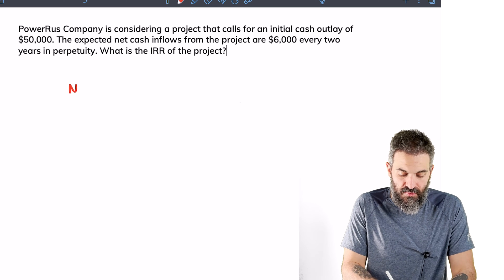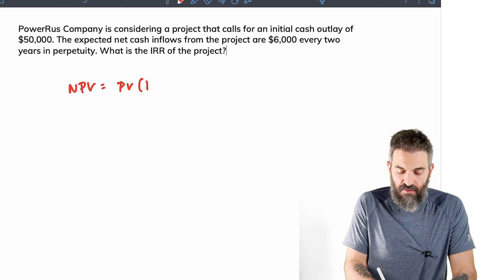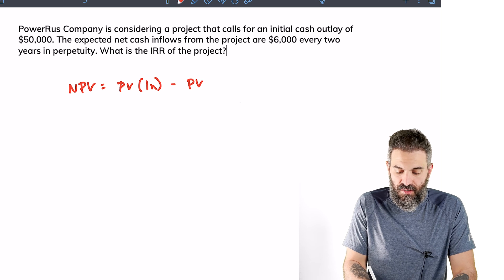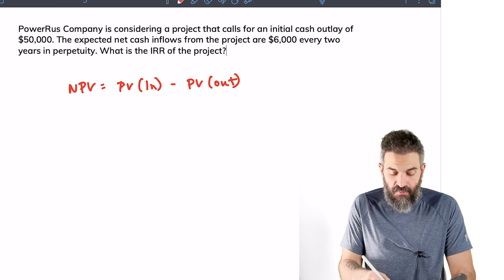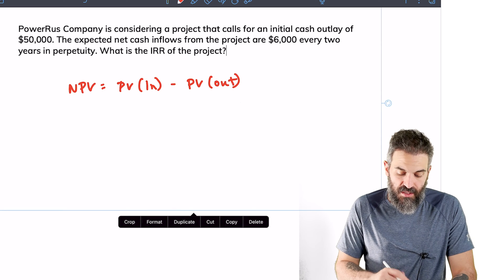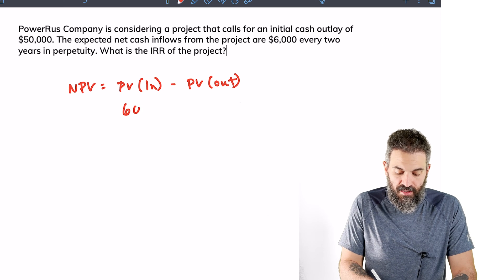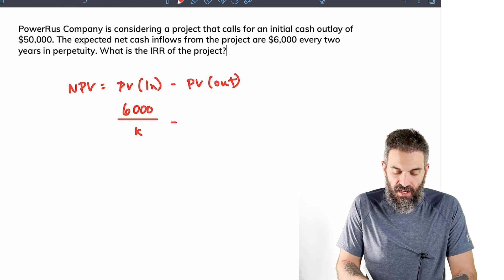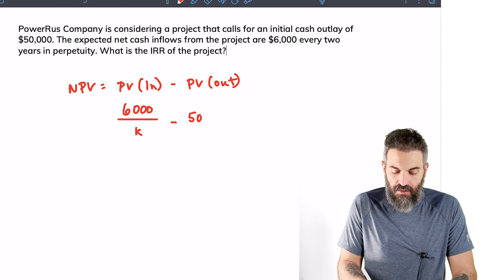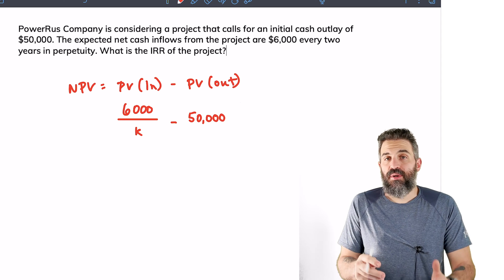The net present value is found by taking the present value of your inflows minus the present value of your outflows. We've also learned in TVM that the present value of a perpetuity is the payment, in this case $6,000, divided by K. The outflow in this case is $50,000.